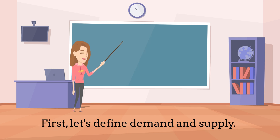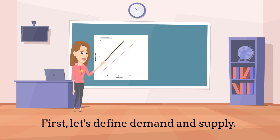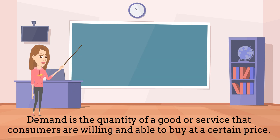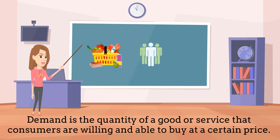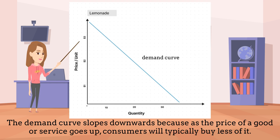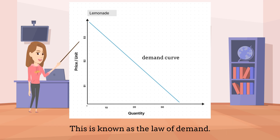First, let's define demand and supply. Demand is the quantity of a good or service that consumers are willing and able to buy at a certain price. The demand curve slopes downwards because as the price of a good or service goes up, consumers will typically buy less of it. This is known as the law of demand.